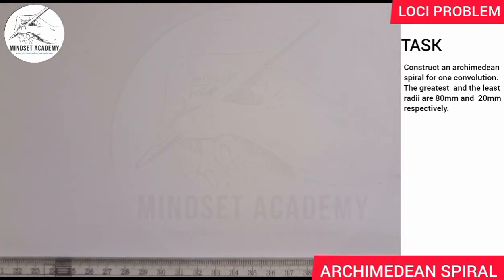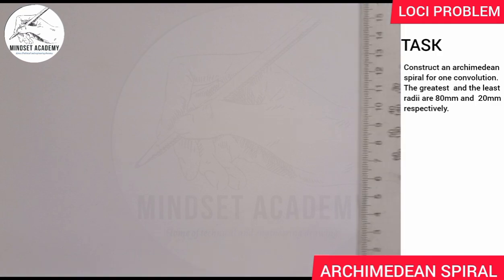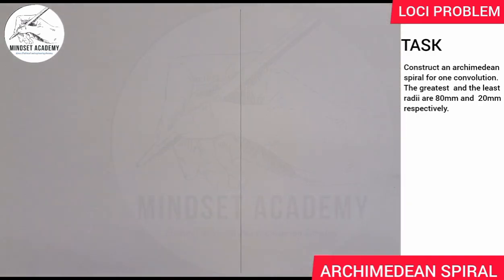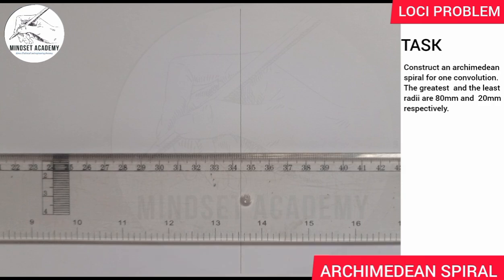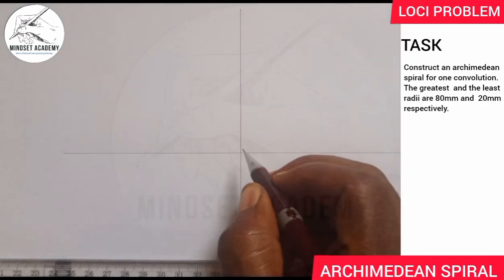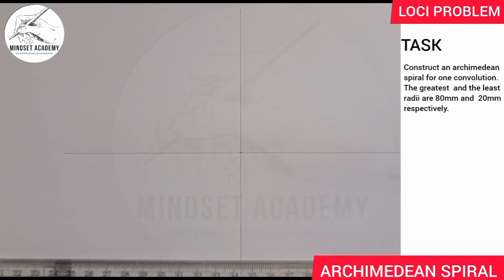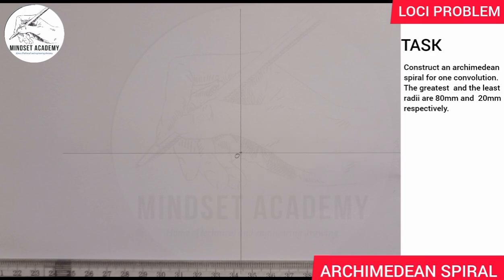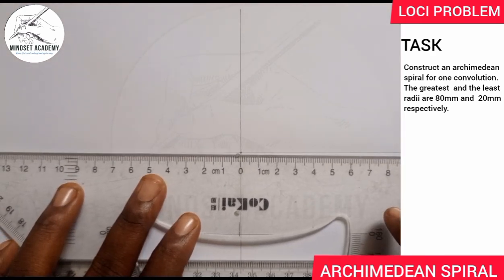The first thing you do when constructing an Archimedean spiral is to draw your vertical line first, then draw your horizontal line. The reason for this is to get the pole, which is the center point where the two lines meet. We are told the greatest and smallest radii are 80 and 20, so from center point O, the greatest radius is 80 millimeters — measure 80 millimeters from the center.